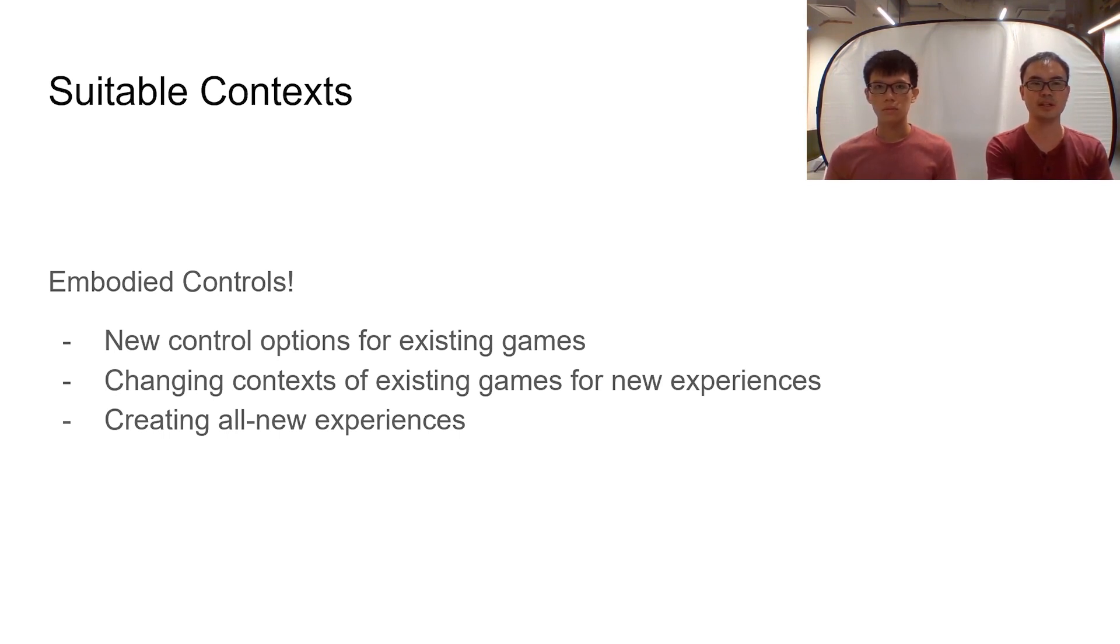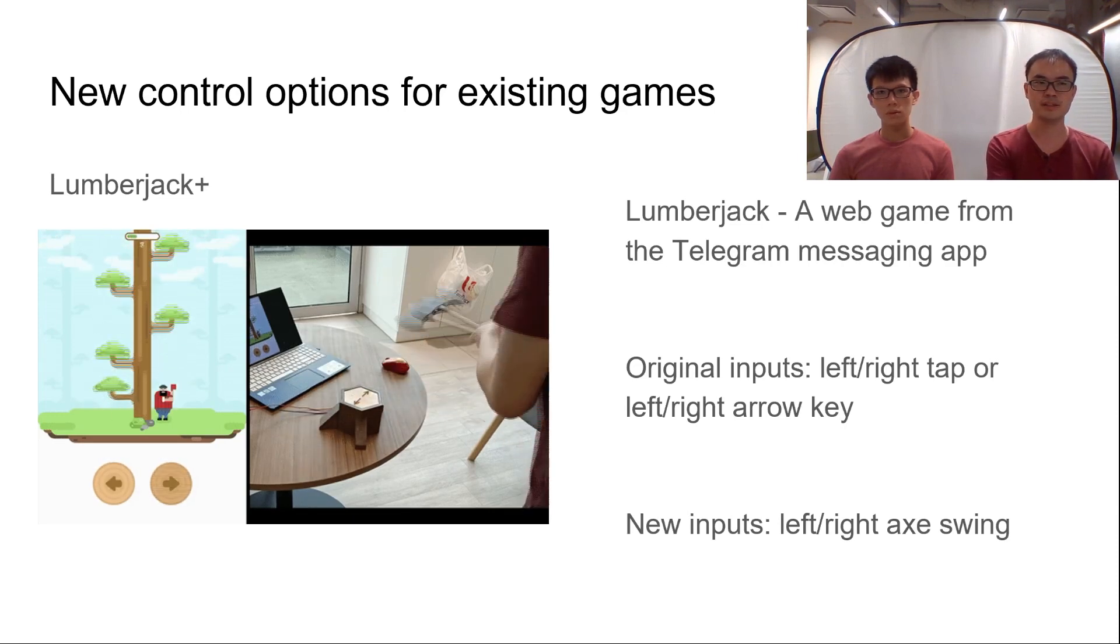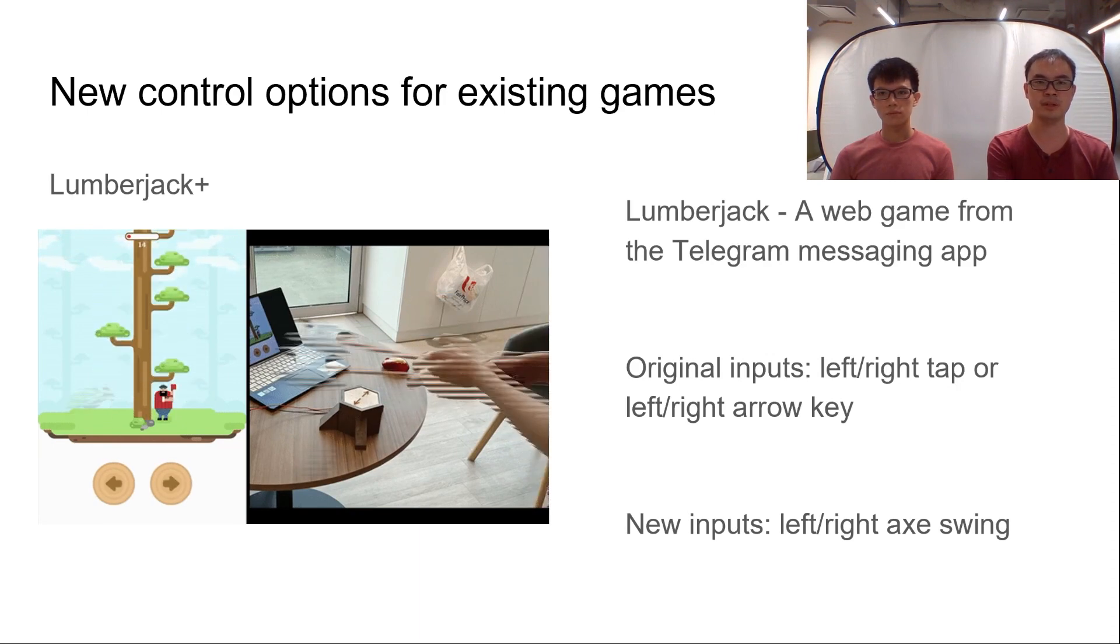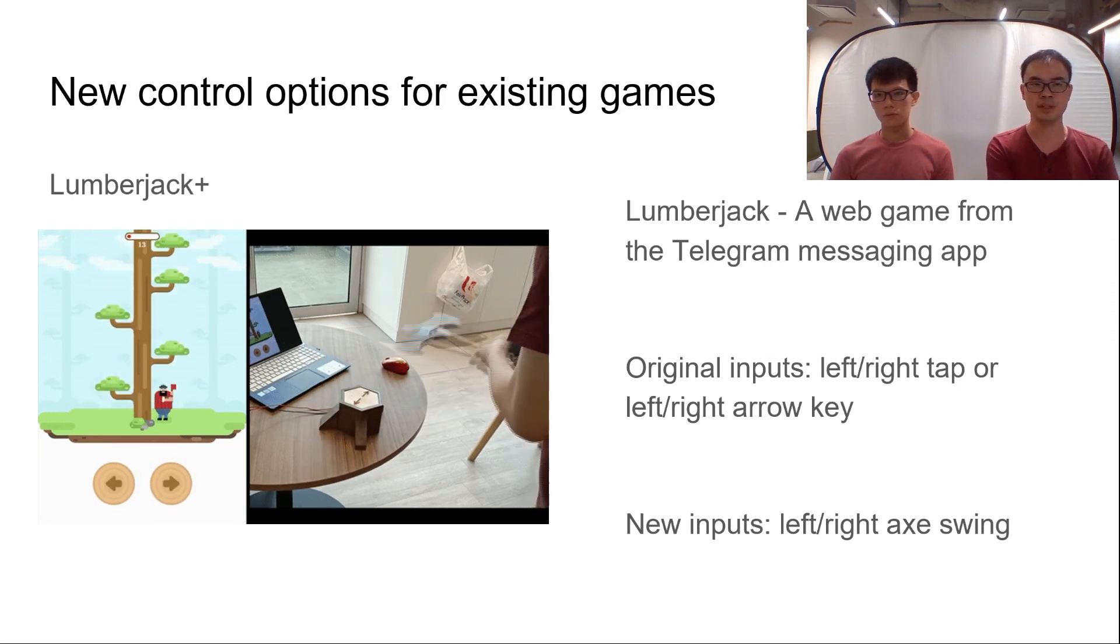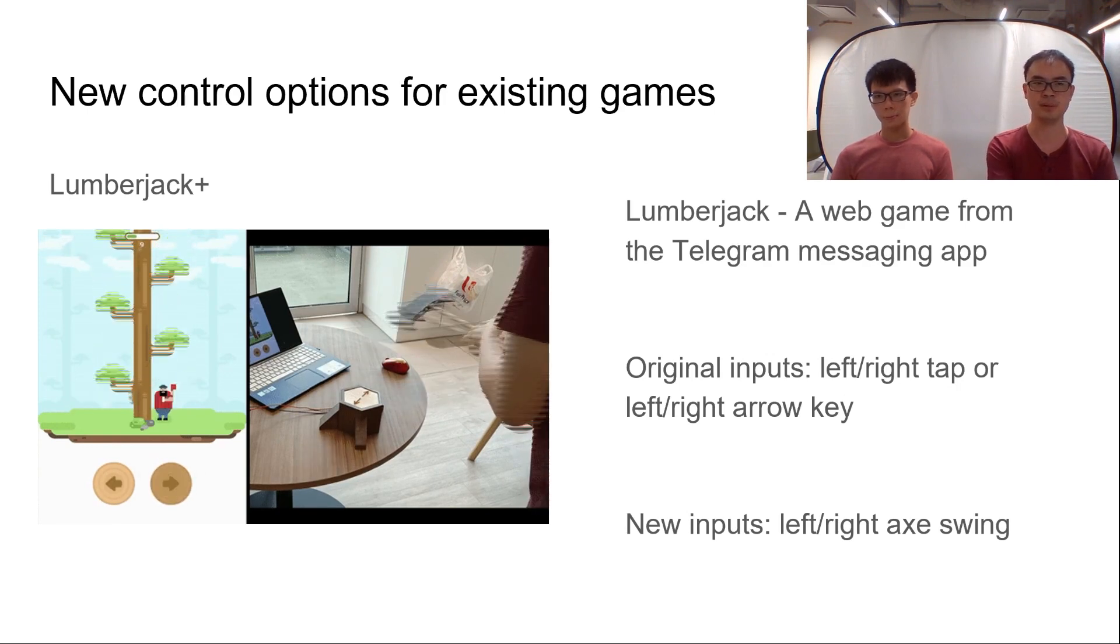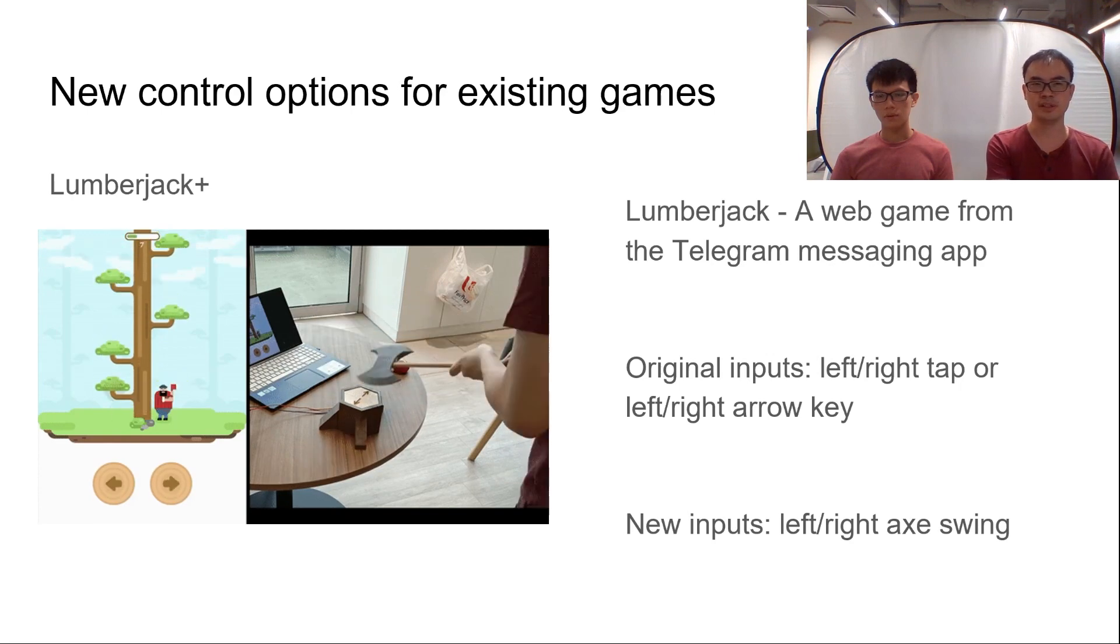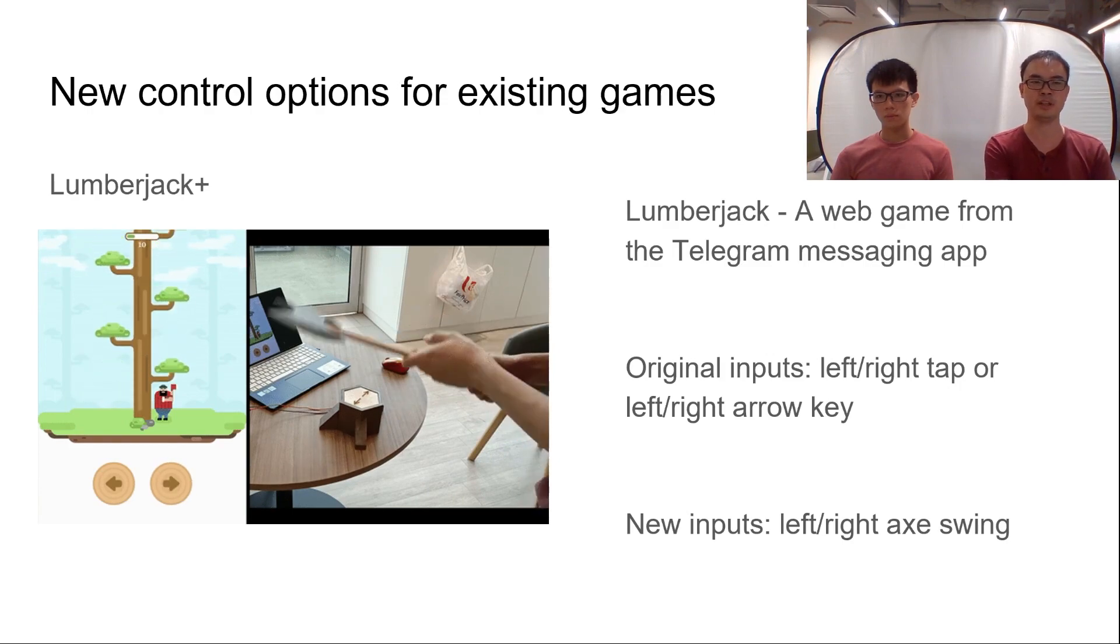So first up is Lumberjack Plus, our example of new controls for existing games. This is a simple web game from Telegram, a popular messaging platform, and its original inputs featured either left and right screen tabs or left and right presses of the keyboard. Using our directional ESSense system we showed earlier, we made a tree stump that houses two conductor pads, while the axe houses some PTFE. After processing the directional inputs from players' swings, the connected Arduino sends the corresponding key press into the computer, providing the relevant input.